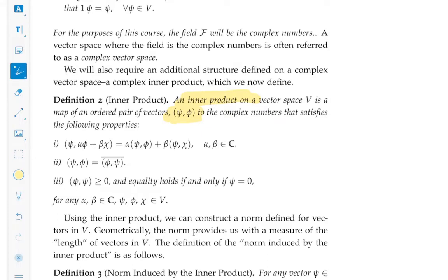Let's start with the last property first. The inner product of a vector with itself is greater than or equal to zero. It's zero only if the vector is zero. The inner product of psi with phi is equal to the complex conjugate of the inner product of phi with psi, reversed. That's going to be important. Remember that the inner product is a complex number. It associates with any two vectors a complex number. The order is important.